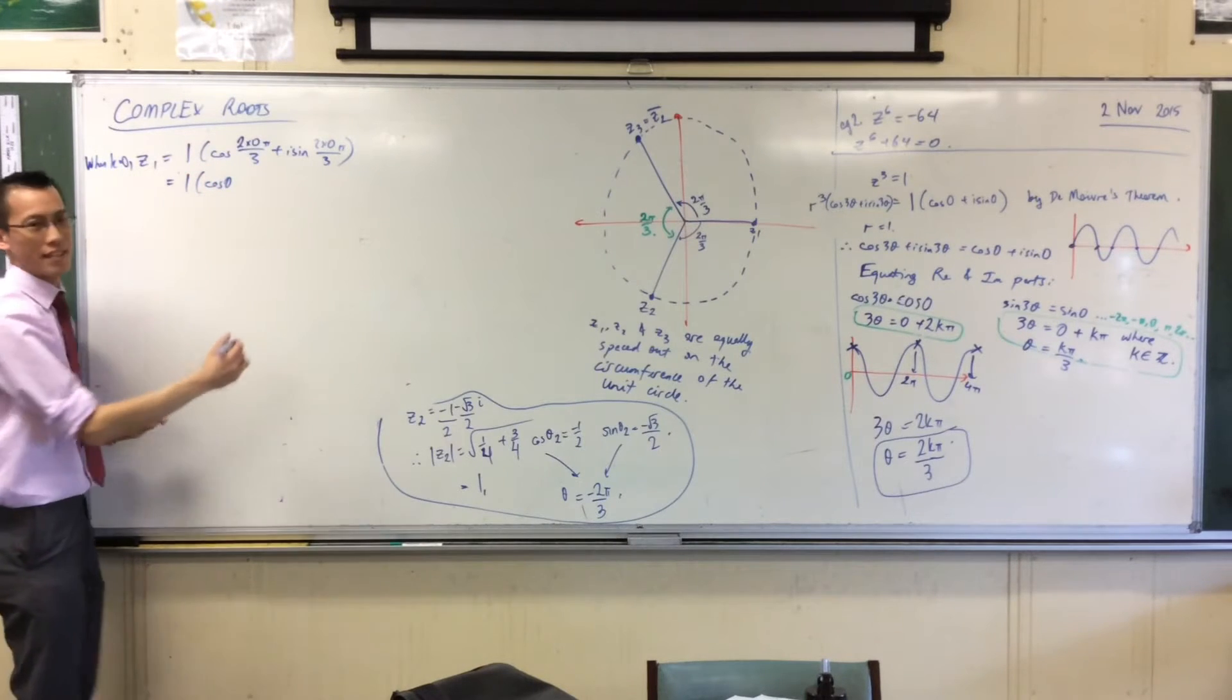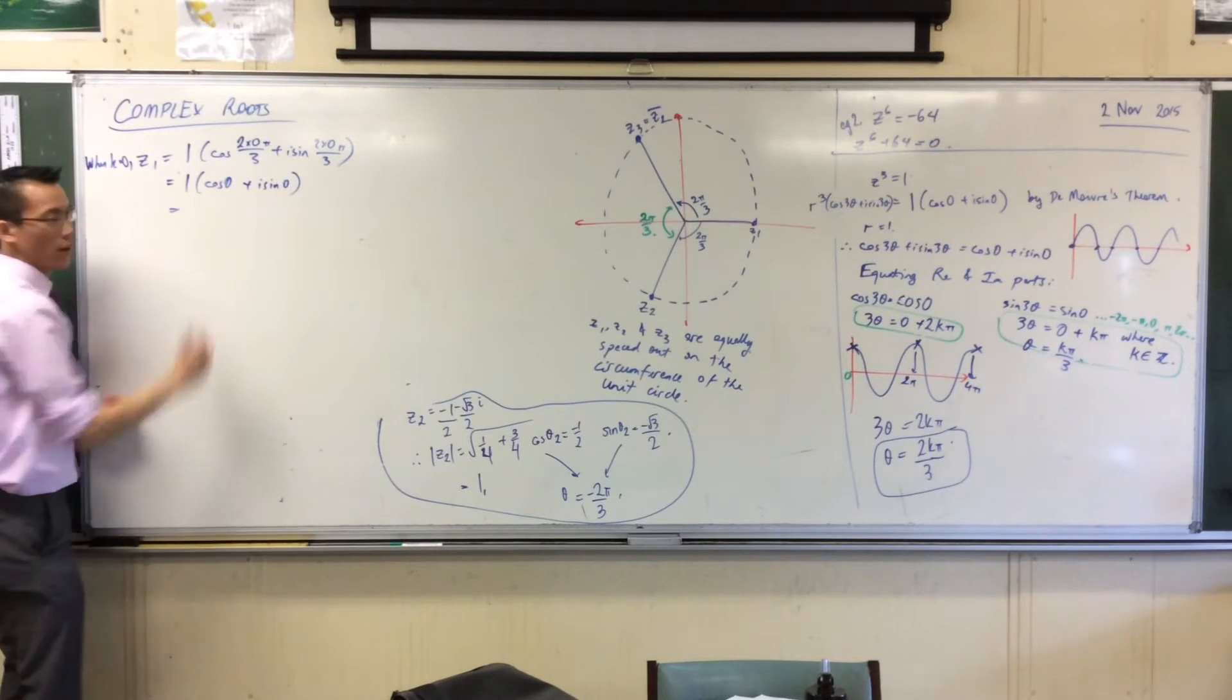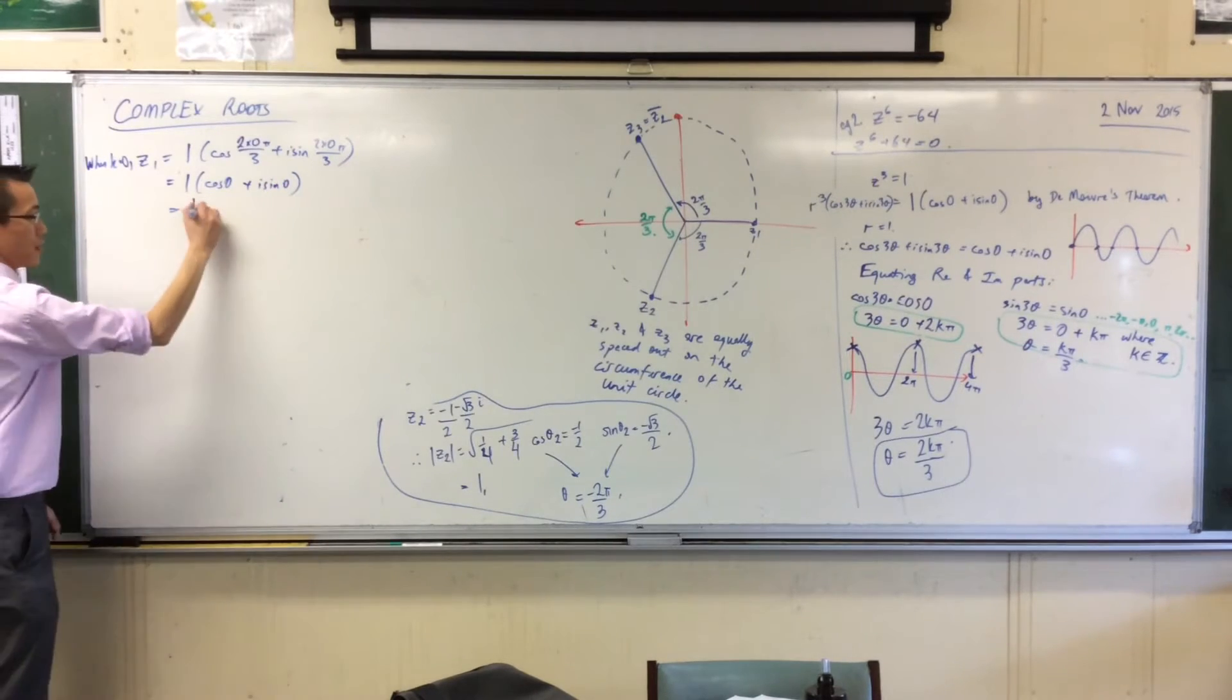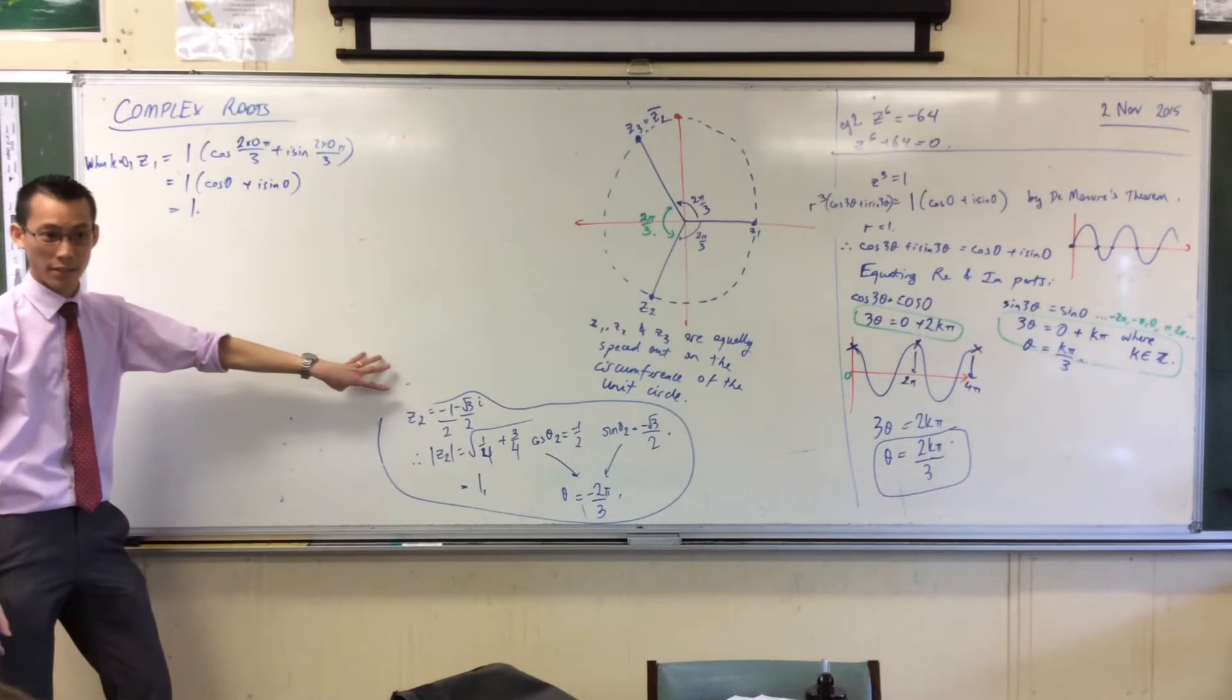1, cos 0, that looks familiar, plus i sine 0, what's my number? 1, good. Confirmed, there's the first root I was expecting.